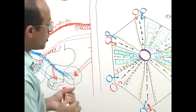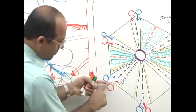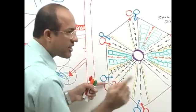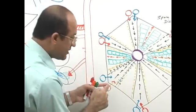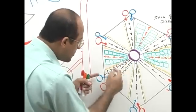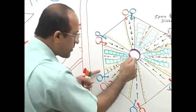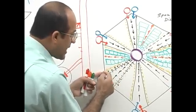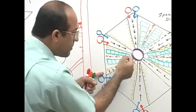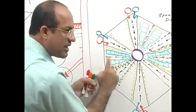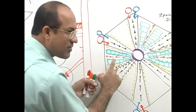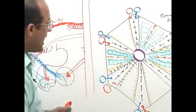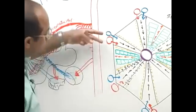Movement of blood is from periphery to the center — this is called centripetal flow. Movement of lymph is from the center outward, and movement of bile is also from center to the outward — this is called centrifugal flow.